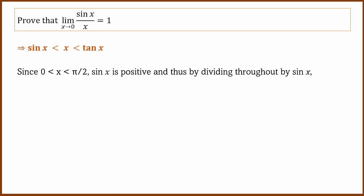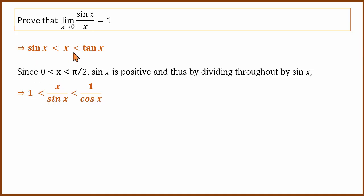Since x is between 0 and 90 degrees, sin x is positive. So we divide throughout by sin x. We get: sin x divided by sin x, then x divided by sin x, then sin x divided by cos x — dividing all parts by sin x.